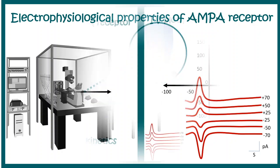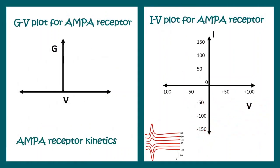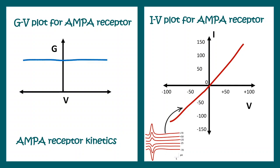Another way to analyze the data is by plotting an IV (current-voltage) curve and a conductance versus voltage (GV) plot. The IV plot shows a linear pattern. The GV plot is pretty much flat, meaning AMPA receptors have no voltage dependence — which is expected, since they are ligand-gated ion channels, not voltage-gated channels.